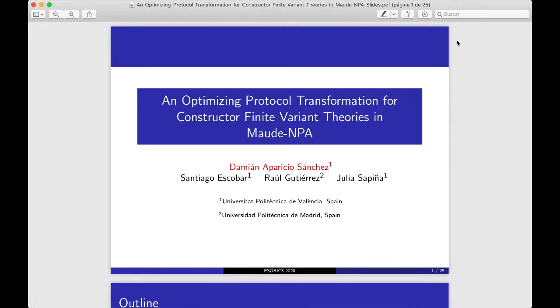Maude-NPA is an analysis tool that can be used to reason about a wide range of cryptographic properties, but sometimes these properties or cryptographic protocols have been beyond Maude-NPA capabilities. For example, the properties cannot be expressed using its equational unification features or for the size of the state space.